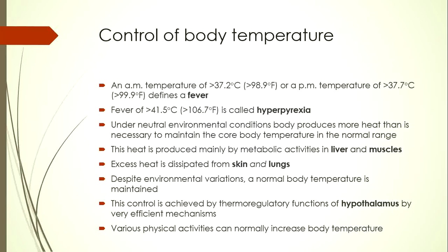Excess heat is dissipated through two major routes: the skin and the lungs. Lung contribution to heat dissipation is minor and relatively steady, while skin dissipation is highly variable and depends upon subcutaneous blood circulation. Blood flow through skin capillaries can vary from barely above zero to as much as 30% of total cardiac output, depending upon the need for heat dissipation or conservation. This control is achieved by the thermoregulatory functions of the hypothalamus, especially the supra-optic nuclei.